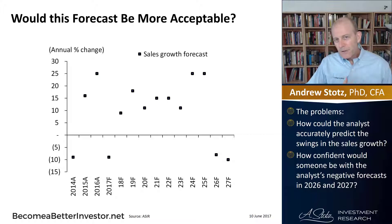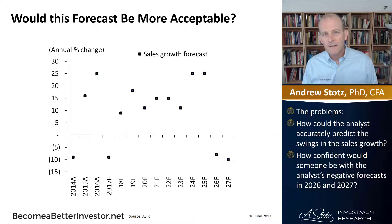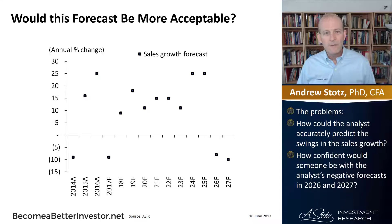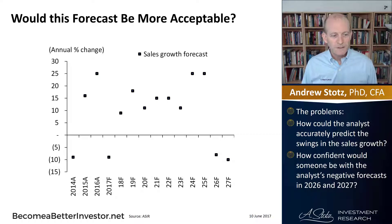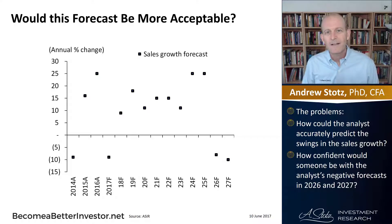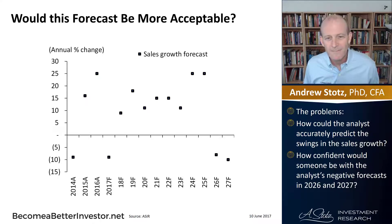More importantly, the further you go out in your forecast, the lower the level of confidence. Who can predict something 10 years from now? How confident would someone be with an analyst's negative forecast in 2026 and 2027? You could say the analyst is forecasting the whole industry and thinks those cycles are going to happen, but how much confidence would you really have in that?